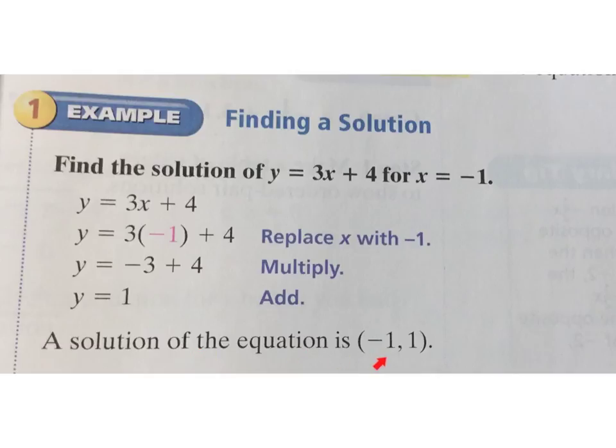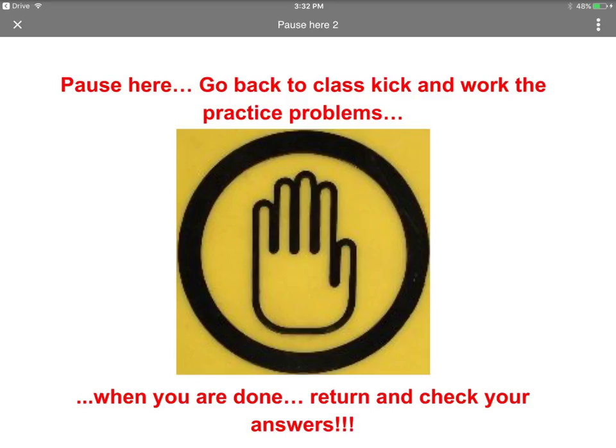We can see then that the solution is the ordered pair. We always list the x first, negative 1, 1. Pause, go ahead and head into class kick. I have a couple there for you.